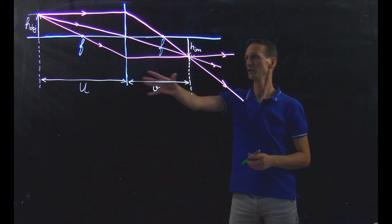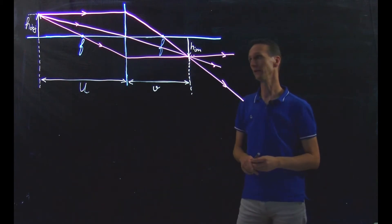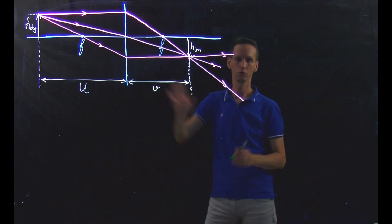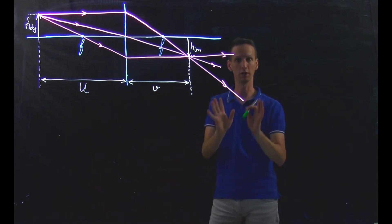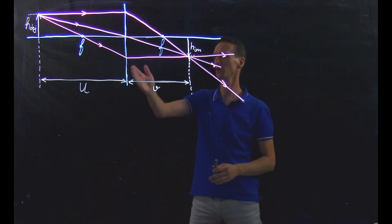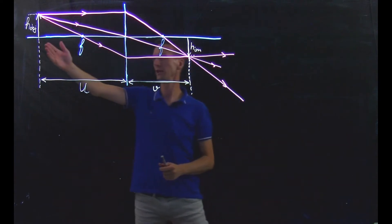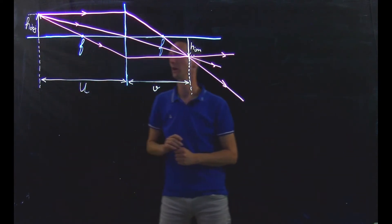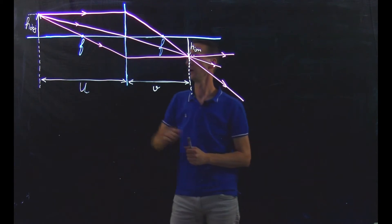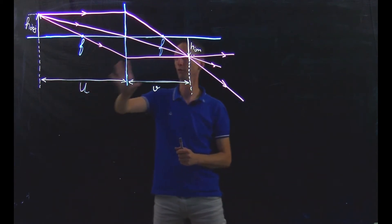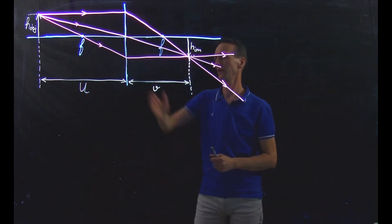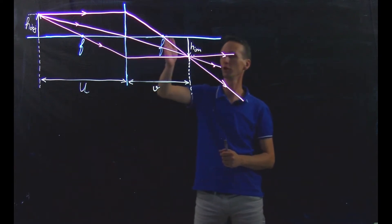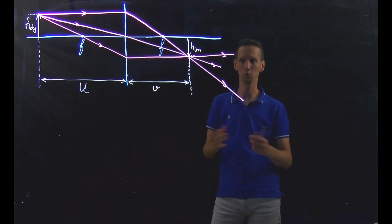Here you see a lens system depicted. In blue we have the lens plane. Note that this holds as long as we look at a thin lens approximation. We have an object depicted with the arrow here of height h-object at a specific position u from the lens plane. The lens is characterized by a focal distance f, meaning we have a focal point before and a focal point after the lens at equal distances.